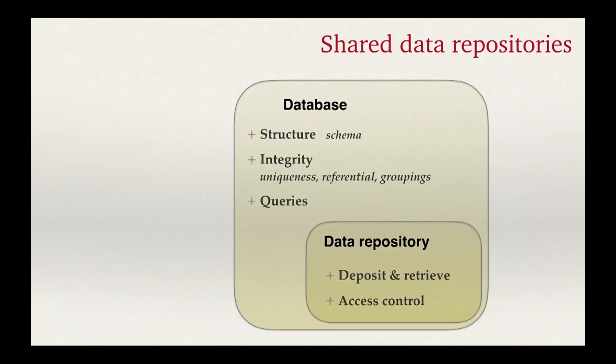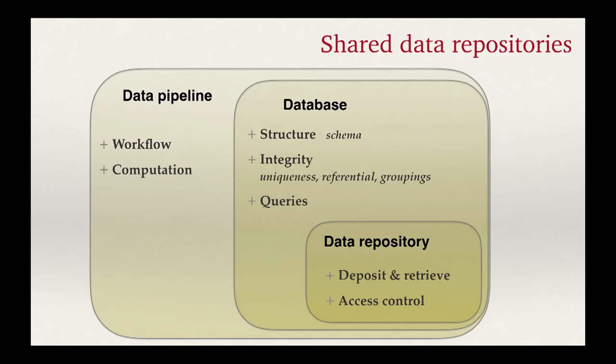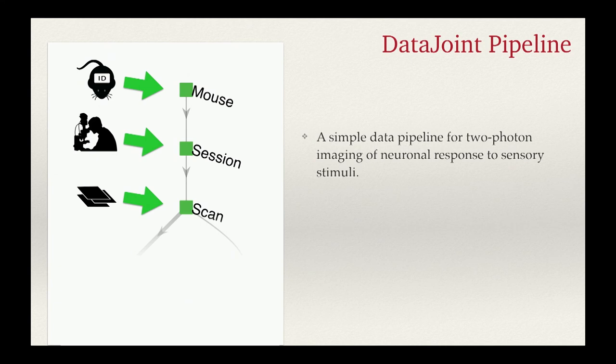A database is also a data repository but has additional functions. It allows you to structure data so that data integrity is observed — dependencies between data, identifiability — and it enforces integrity. It also allows complex queries: you can ask the database to give you derived data, summary data, or a different projection of what you put in. A data pipeline additionally enforces and communicates the workflow and integrates computation into the pipeline, providing a consistent way to perform computations.